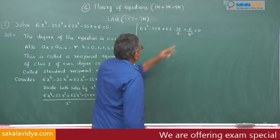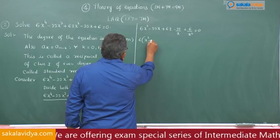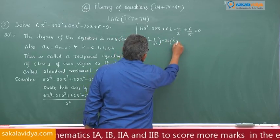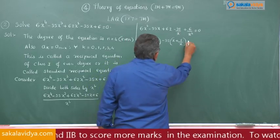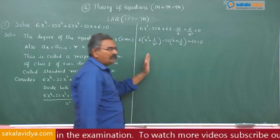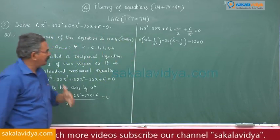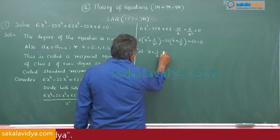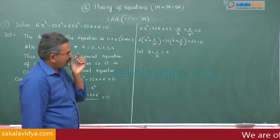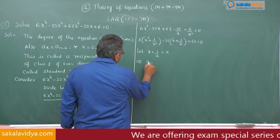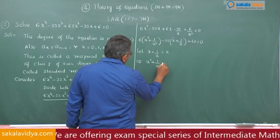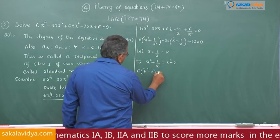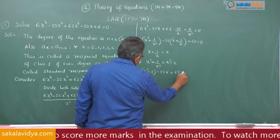Now, from these two terms take 6 common to get x² plus 1 over x², and from these two take minus 35 common to get x plus 1 over x, plus 62 equals 0. We reduce this to a quadratic equation. Let x plus 1 over x equal k, which implies x² plus 1 over x² equals k² minus 2. So we get: 6(k² minus 2) minus 35k plus 62 equals 0.